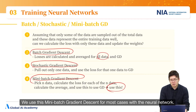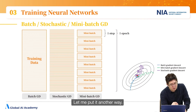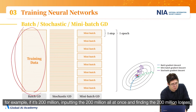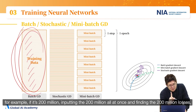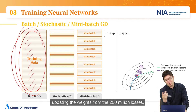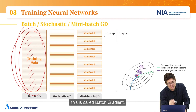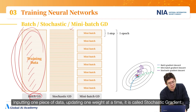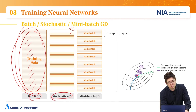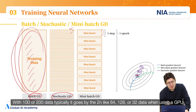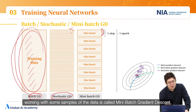We actually use mini-batch gradient descent quite a lot — for most neural network cases. To summarize: inputting all the data at once — for example, all 200 million — finding all 200 million losses, and updating the weights is called batch gradient descent. Inputting one piece of data and updating weights one at a time is called stochastic gradient descent. Working with some samples — typically sizes like 32, 64, or 128 data points when using a GPU — is called mini-batch gradient descent.